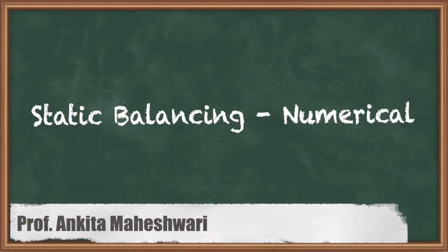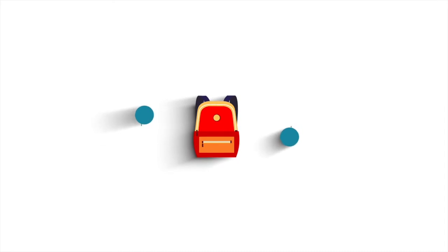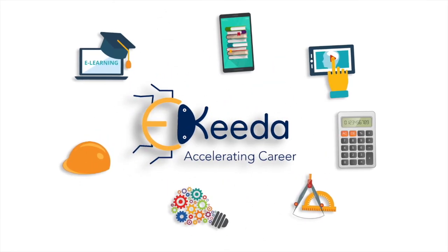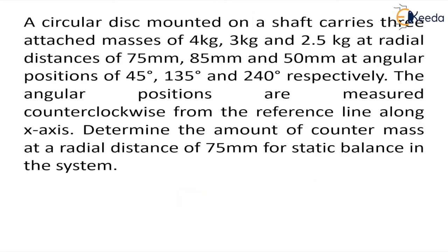Hello everyone, in this video we will discuss a numerical of static balancing. We already know that a system is said to be in static balance when the combined mass centers lie on the axis of rotation, or in other words we can say that the resultant of the forces acting on the system should be equal to zero.